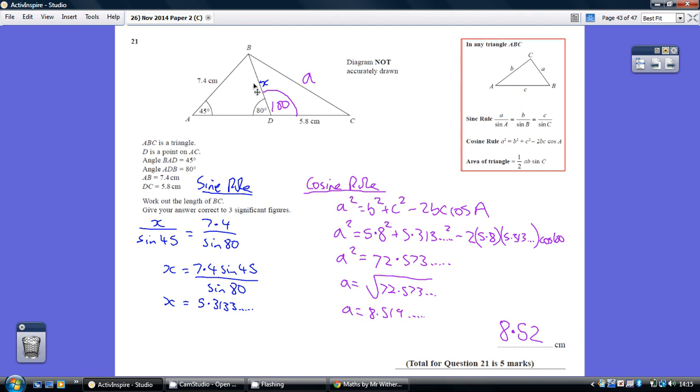So we know the length of X. Now looking at triangle DBC, what do we know? We know this one side, DC, 5.8. We know DB, because we've just worked it out, 5.3133. And we know this angle here, because angles on a straight line add up to 180, so this angle is 100.